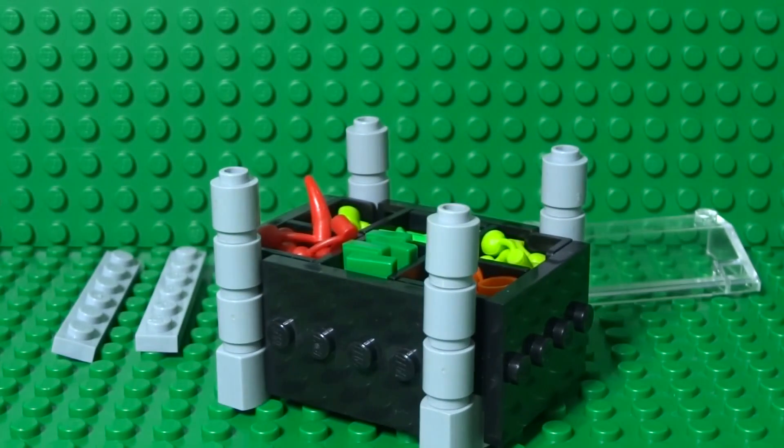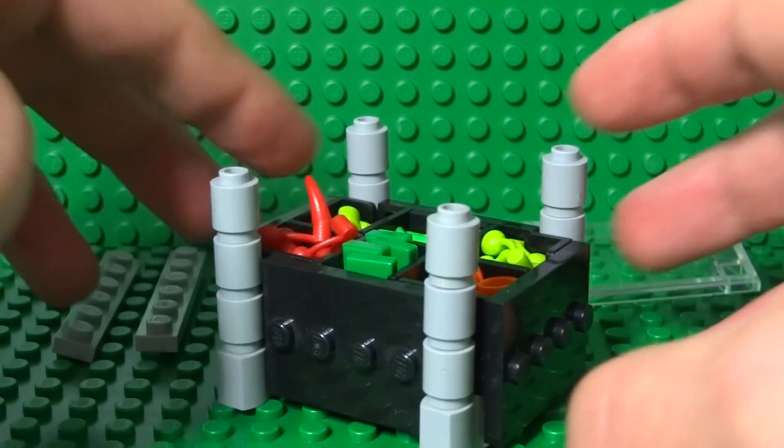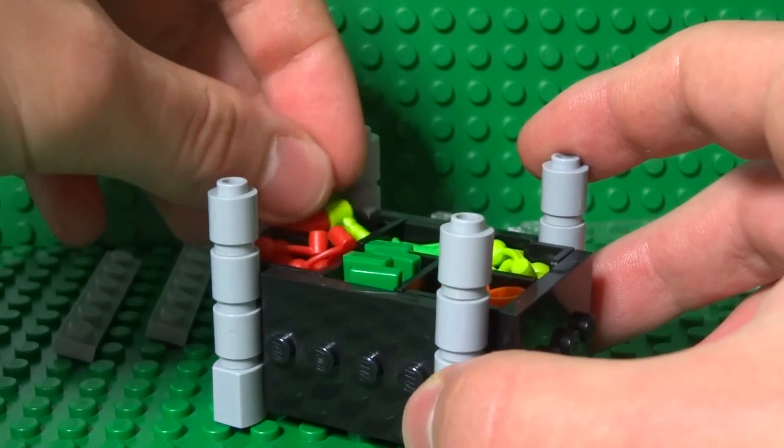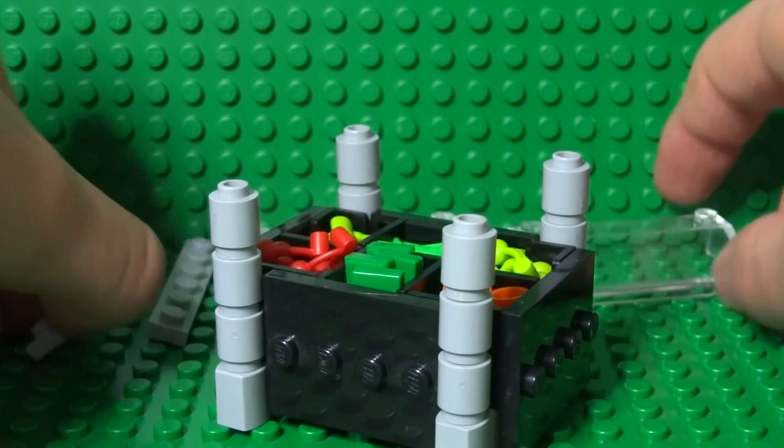So your salad bar is almost complete. Now all that's left to do is just put your salad back in if any has fallen out and build the glass roof.